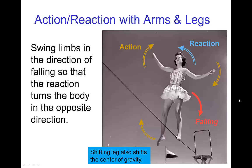When the tightrope walker does not have a pole, they can use their arms out to the sides for the same purpose. Shifting the arms allows for rapid shifts of the center of gravity to maintain balance. But then to recover balance, the walker can rotate the arms — and in this case the walker is also moving her leg — rotating those in the direction of the fall, and the resulting reaction helps them to recover balance.